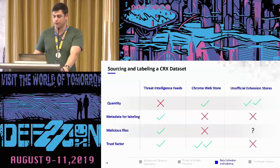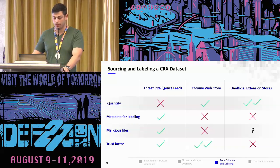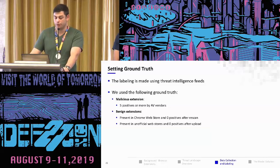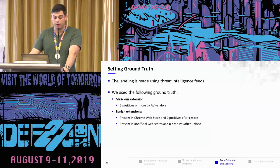To sum up: threat intelligence feeds were best in everything except quantity. So we used both the official Chrome Web Store and the unofficial stores together with the feeds, uploading files to get the results and metadata necessary for our ground truth. We decided to use five positive AV vendor detections to label a file as malicious. As noted earlier, not many vendors scan these files, so five is not a lot but was enough for this research. For benign, we used files from the official store or unofficial stores that received zero positives after scanning in VirusTotal.